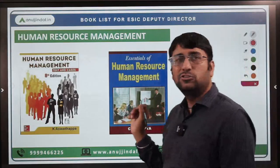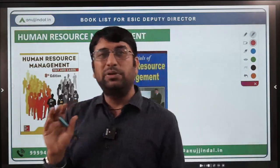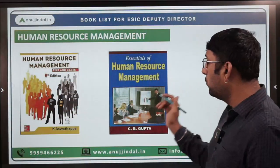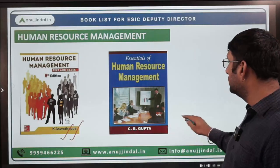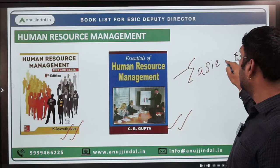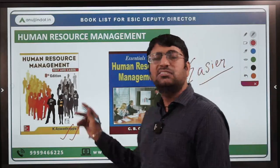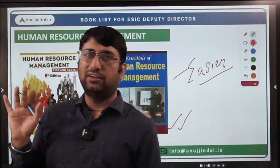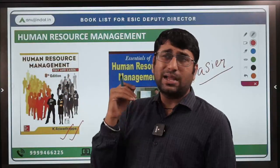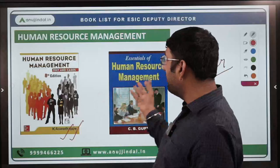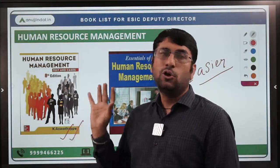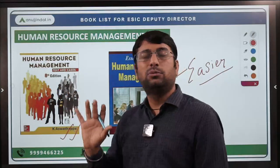Human Resources Management is another important topic from Section B where you can score well. The books you can refer to are: one by K.S. Thapa, and the other by Dr. C.B. Gupta. The C.B. Gupta book is written in easier language. However, in terms of syllabus coverage, both books are equally good and equally important.